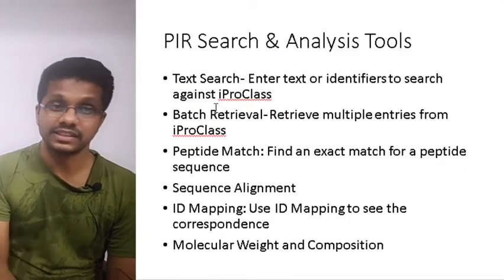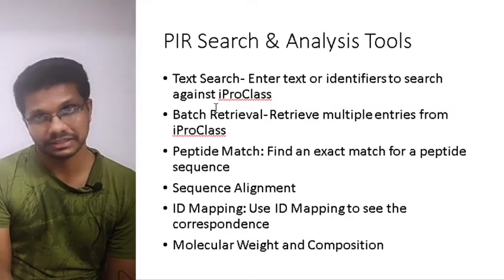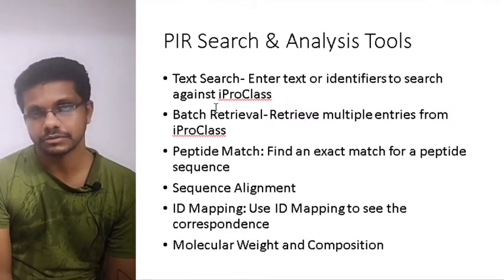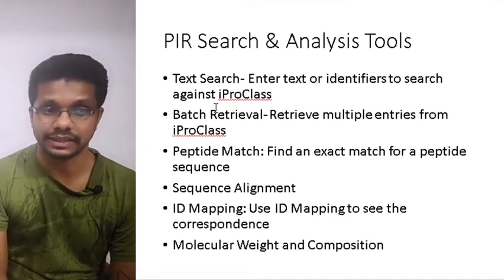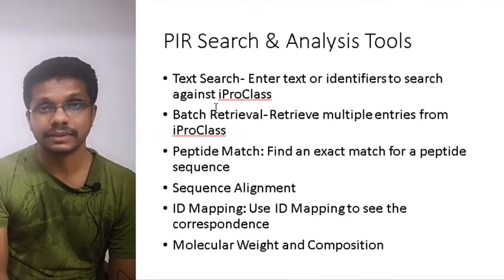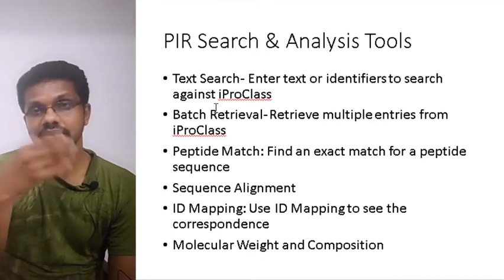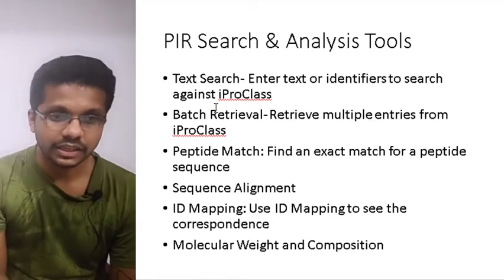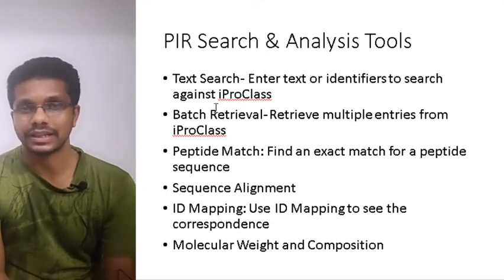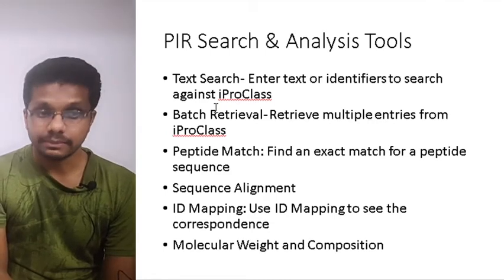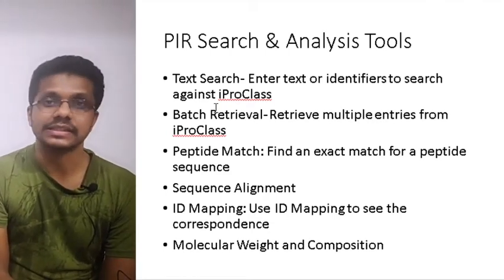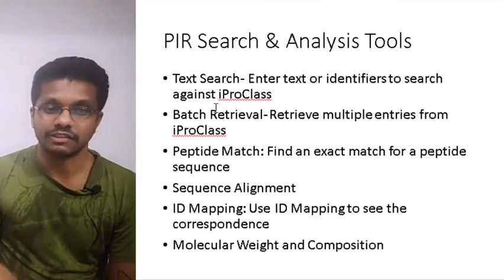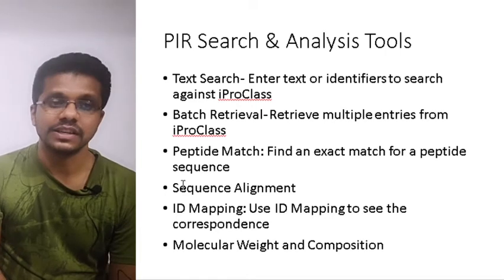PIR also has different types of search mechanisms, including text search similar to a Google search, batch retrieval where multiple records can be retrieved simultaneously, and peptide match where you can search by entering a sequence to find similar sequences. Sequence alignments — both global and local — can be performed, ID mapping shows correspondence of IDs across different proteins, and molecular weight and composition of each protein can also be retrieved.